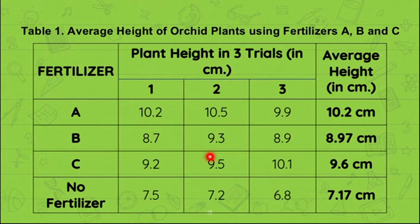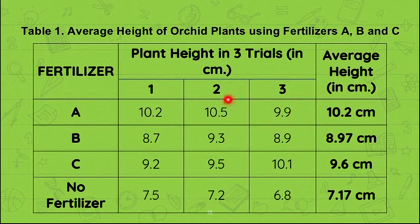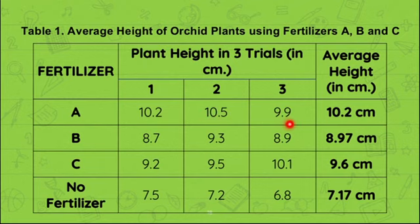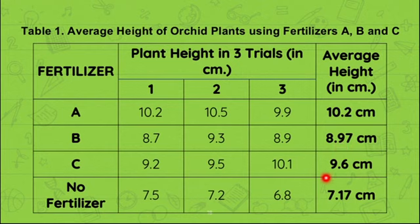We don't just apply one fertilizer for each plant once — we need to repeat it three times to make our results valid. In our first trial, the data gathered were: 10.2 centimeters for fertilizer A, 8.7 for B, and 9.2 centimeters for C. We repeated the experiment again in the second trial, gathered more data, and then for the third trial as well. Then we compute the average height by getting the sum of the first, second, and third trials and dividing by three. So 10.2 + 10.5 + 9.9 divided by 3 equals 10.2 centimeters for fertilizer A, 8.97 for fertilizer B, 9.6 for fertilizer C, and 7.17 for no fertilizer.